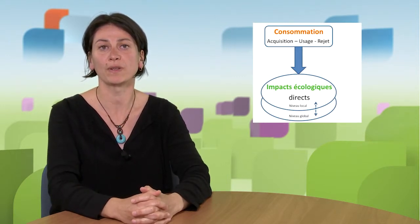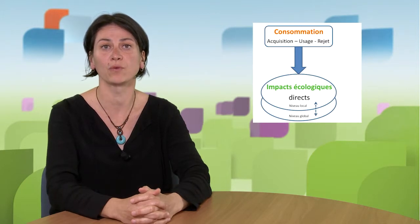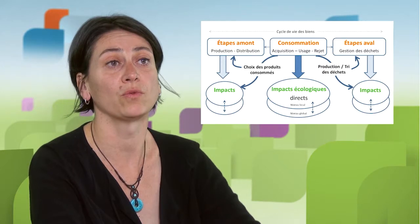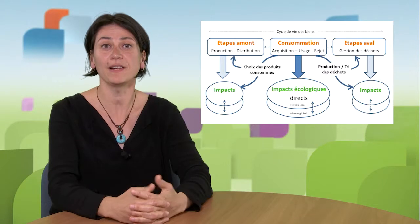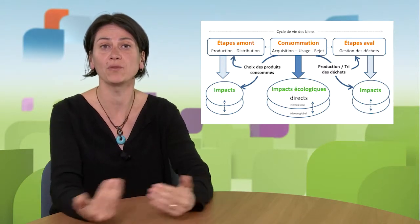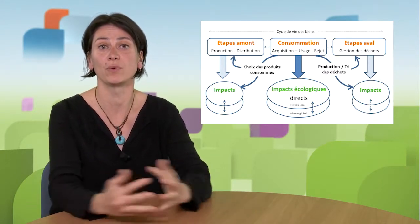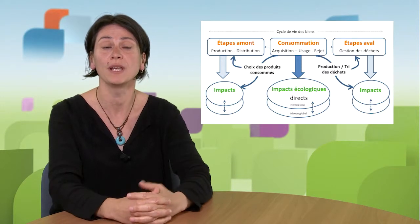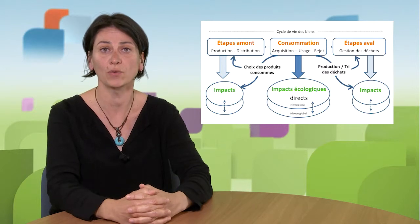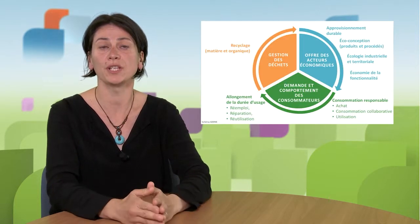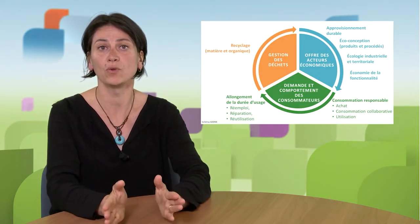These impacts are directly linked to consumption practices — we talk about a direct impact of consumption. But they also depend on the way consumption goods are produced and waste is generated. So, these consumption habits have an impact on the life cycle of a product, and this is where we talk about an indirect impact on the upstream and downstream phases of consumption.